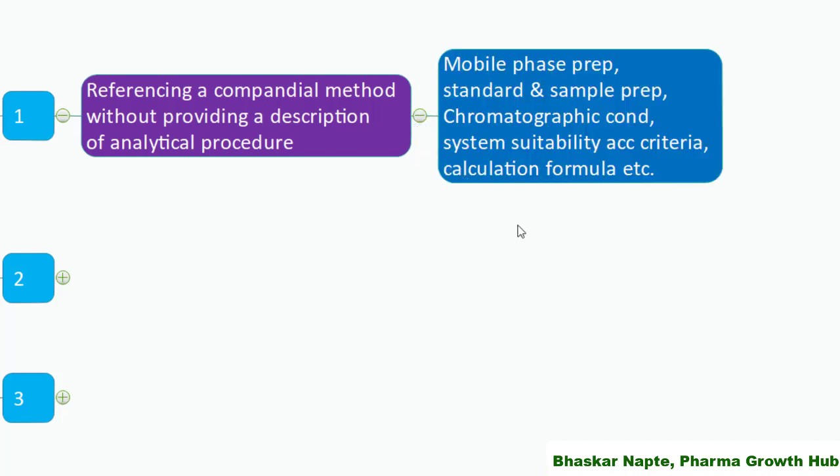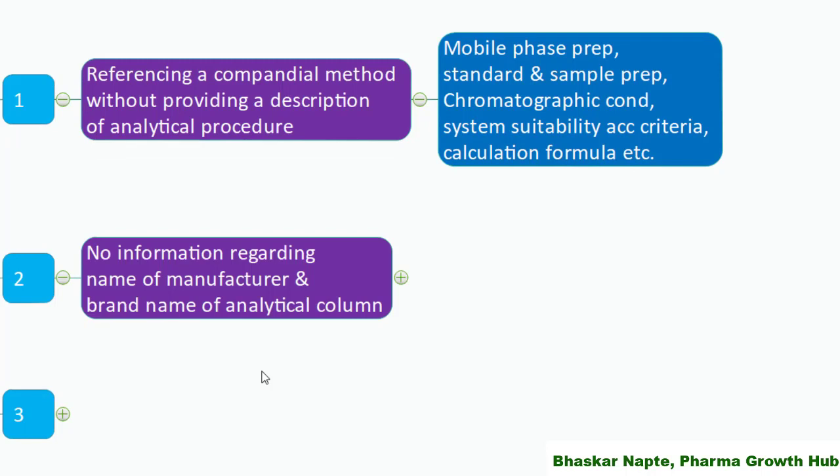Mobile phase preparation, standard and sample preparation, chromatographic conditions, acceptance criteria for system suitability, calculation details, and reference blank, standard, and sample chromatograms are very critical information. This information must be included in the method of analysis. Just giving a reference to a compendium is not a good idea.